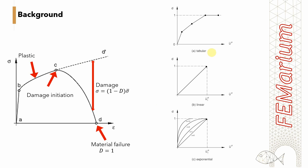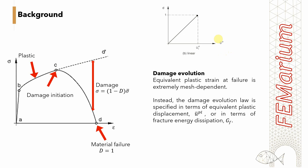ABAQUS offers different damage evolution rules. In all these rules, the damage on the vertical axis will change from 0 to 1. You can input the evolution in a tabular form or by a linear or an exponential function. Note that this evolution cannot be presented with respect to plastic strain, because the plastic strain at the failure point is extremely mesh dependent. That is why ABAQUS uses alternative parameters: plastic displacement or fracture energy dissipation.